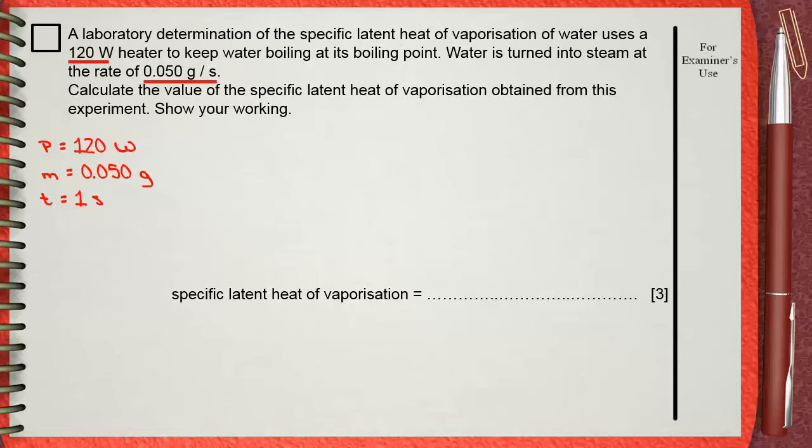He wants you to calculate LV, the specific latent heat of vaporization. LV equals Q divided by M. If you use an electric heater, it's power multiplied by time divided by M.